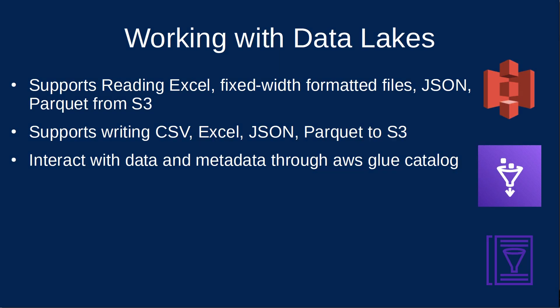Data Wrangler makes it easier to read and write data by having functions to connect and write to Amazon S3. It currently supports reading Excel, fixed-width formatted files, JSON, and Parquet, and writing to CSV, Excel, JSON, and Parquet. If your data is organized with AWS Glue Catalog, there are dedicated functions to interact with this metadata.